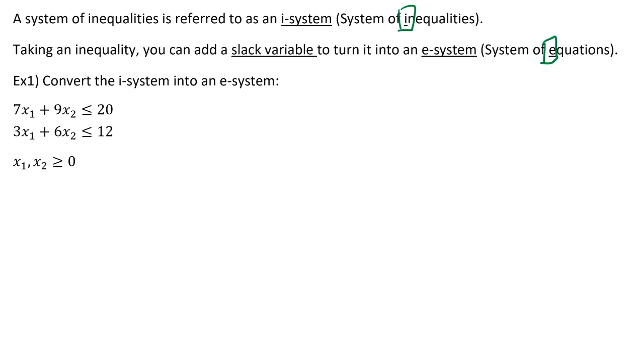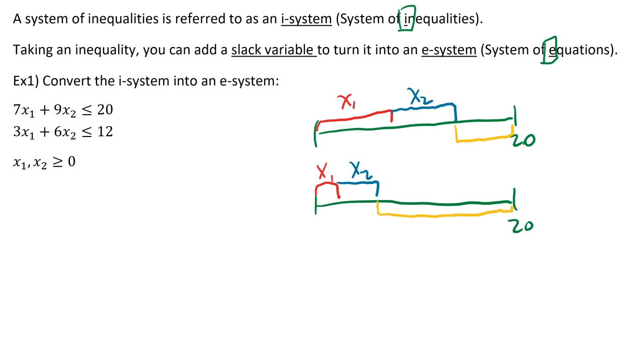Here's how we do that. An inequality, like less than or equal to 20, for example, just means that if you have a rope, say, that is 20 feet long. Less than or equal to 20 means that whenever you add up our two variables, and they can be multiplied by numbers. Let's say this is x1 and x2. It means there's going to be a gap. Now we don't know what size that gap is. So it could be like that, with a fairly small gap. Or x1 and x2 could be really small, and it could be a really, really large gap. We have no idea.